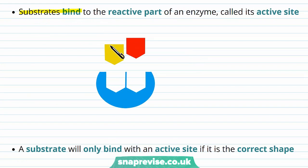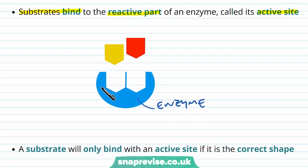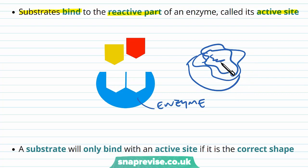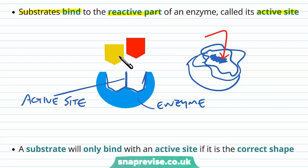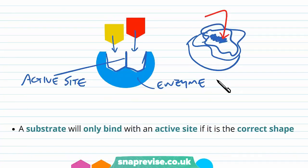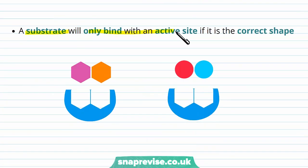Substrates have to bind to a specific part of the enzyme called the active site. When you look at most enzyme diagrams, you'll see a slot shape — a cleft or pocket within the 3D protein structure. The substrate fits into that area, which is called the active site. A substrate only fits into an enzyme's active site if it's the correct shape, since large molecules in the body must have specific shapes for their function.